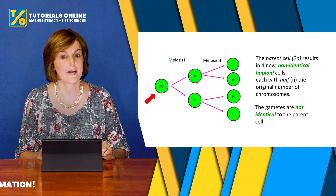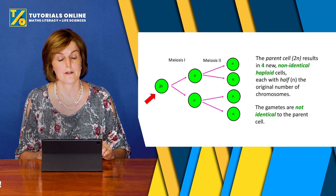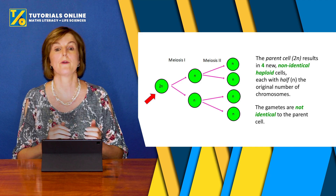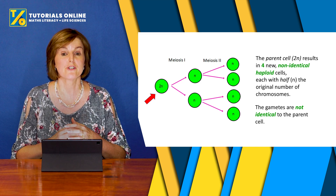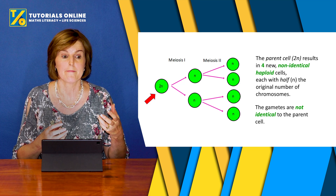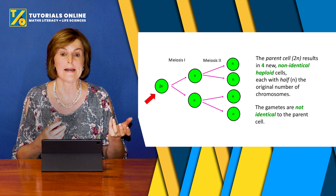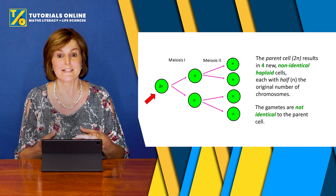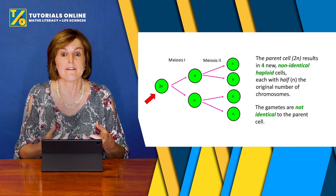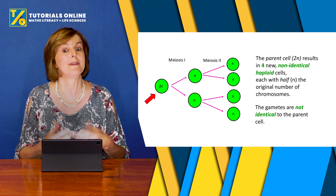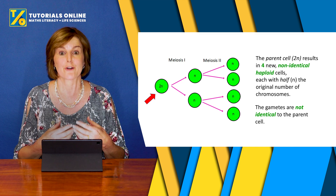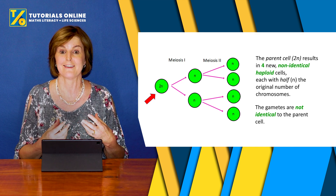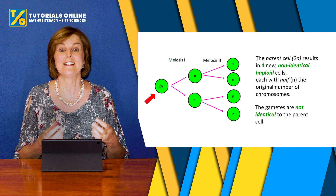The gametes are not identical to the parent cell. Remember, we are making sperm cells or egg cells. Imagine if the man had sperm that were identical and the female had egg cells that were identical — then every child they ever have would be identical, because there was no change in the chromosomes and the genes that they carry.